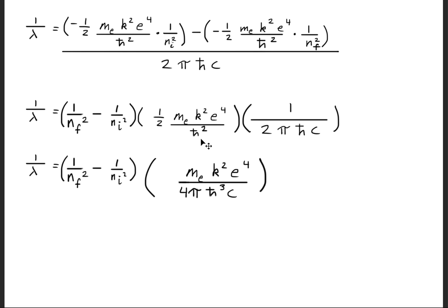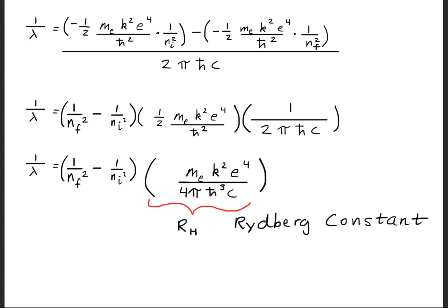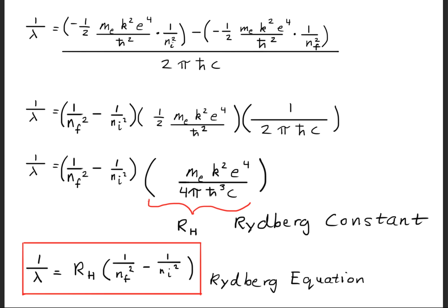Multiplying the factored terms together gives the coefficient as the mass of the electron times the Coulomb constant squared times the elementary charge to the fourth power, divided by 4π times h-bar cubed times the speed of light. This coefficient is the Rydberg constant, given the symbol R sub H. Substituting in the symbol yields the Rydberg equation, completing the derivation.